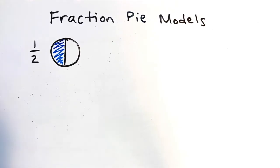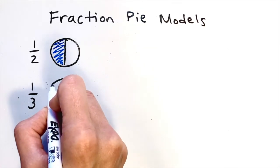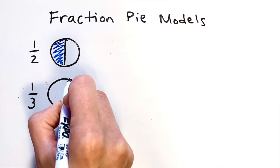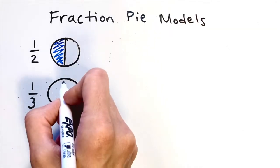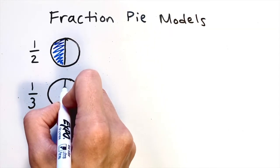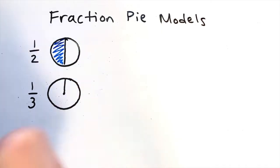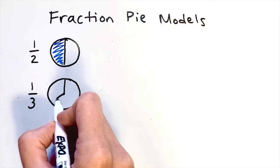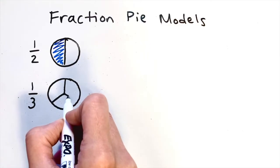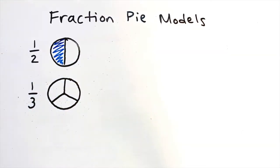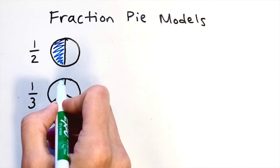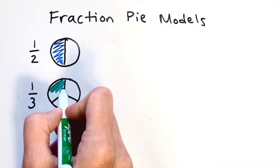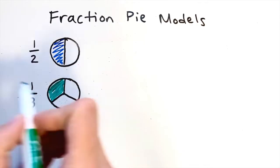Let's take a look at how to draw one third using a pie model. I'll draw a circle and this time draw a line down the middle but not all the way — I'll stop when I hit the center of the circle. Then I think about it like drawing a peace sign: one line diagonal out to one side and then to the other, like a peace sign but without that center line at the bottom. Then I'll color in one of these pieces to show one third. Just remember that one third is kind of similar to a peace sign.